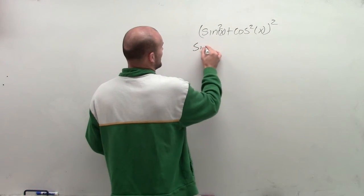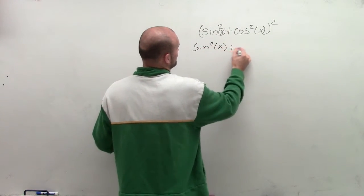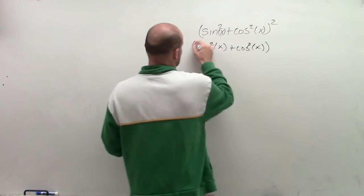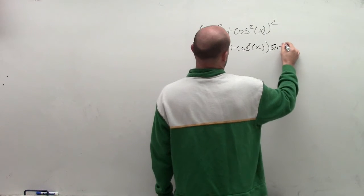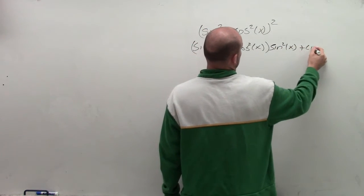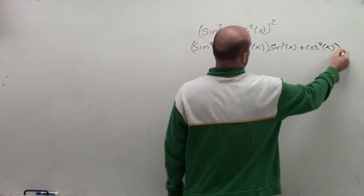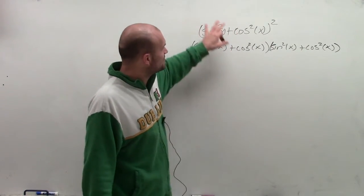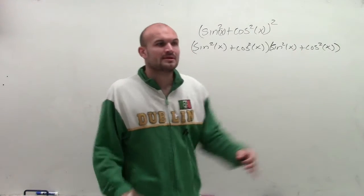So therefore, remember, I can rewrite this as sine squared of x plus cosine squared of x times sine squared of x plus cosine squared of x. And that's the main important thing that I'm even going to take extra time to rewrite, just so you guys remember, oh, I have to multiply this by itself.